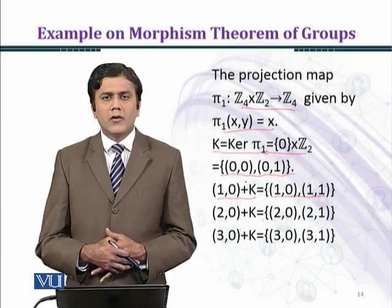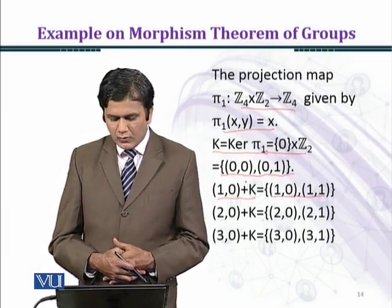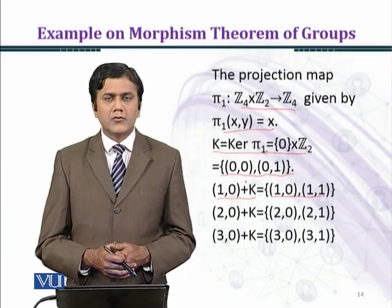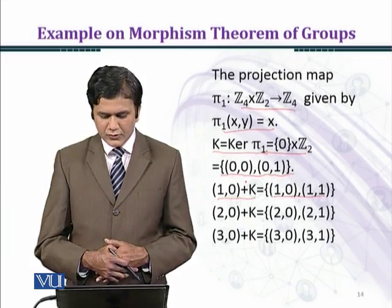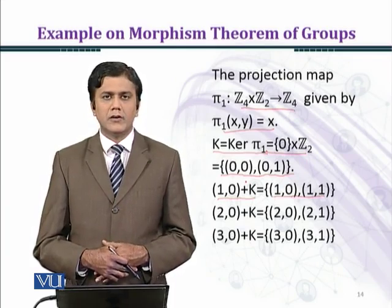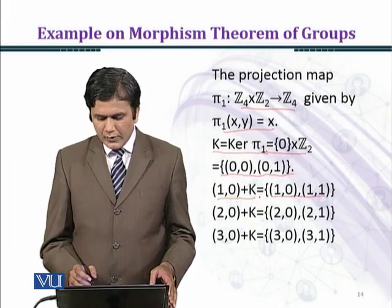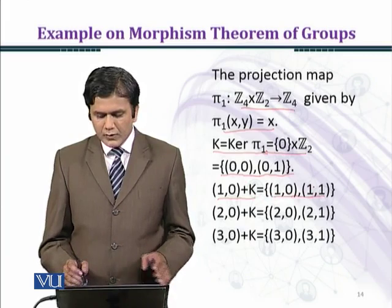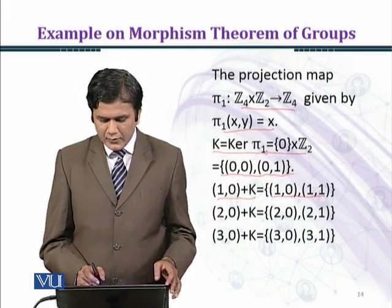We add corresponding coordinates: the first coordinates are considered under modulo 4 and the second coordinates under modulo 2. In this manner, we get (1,0) and (1,1) in the first left coset.